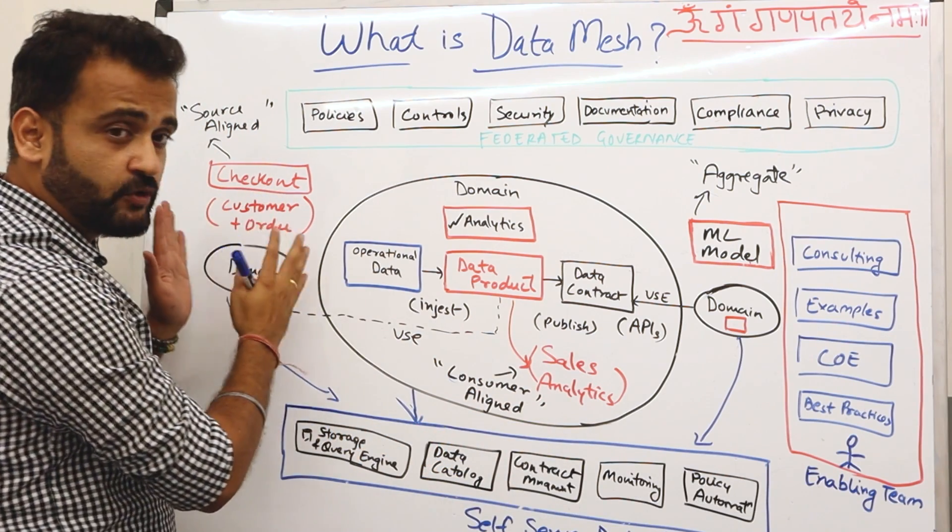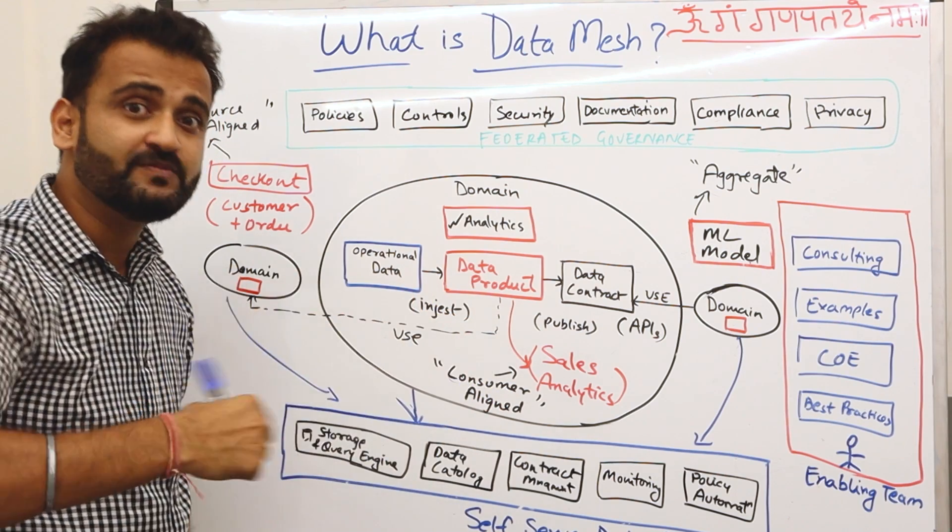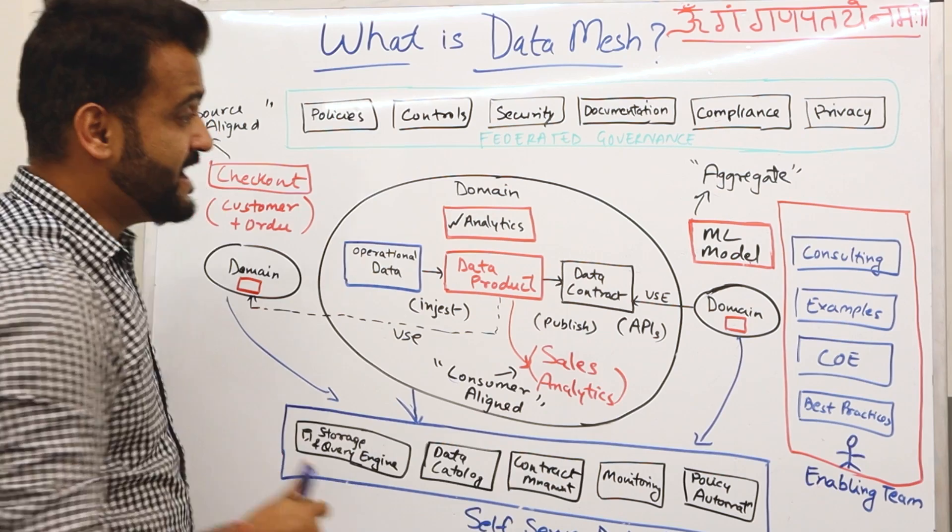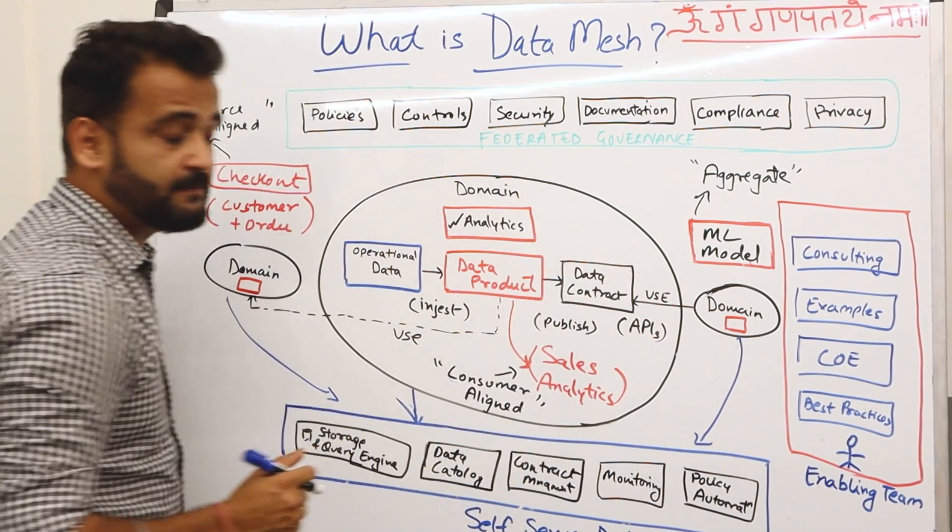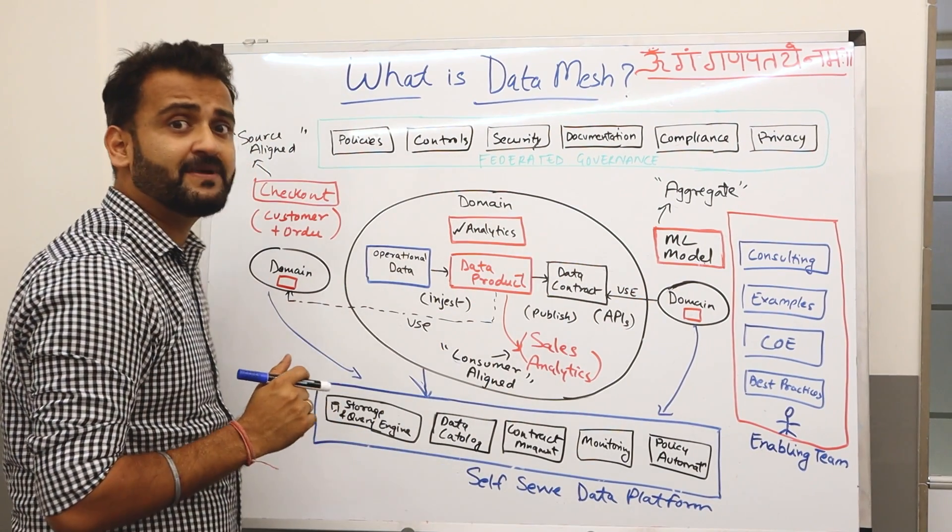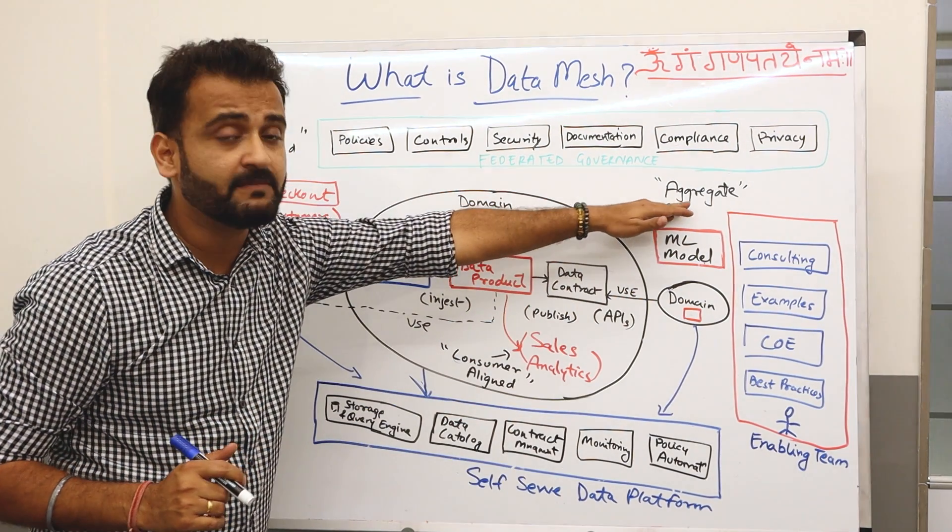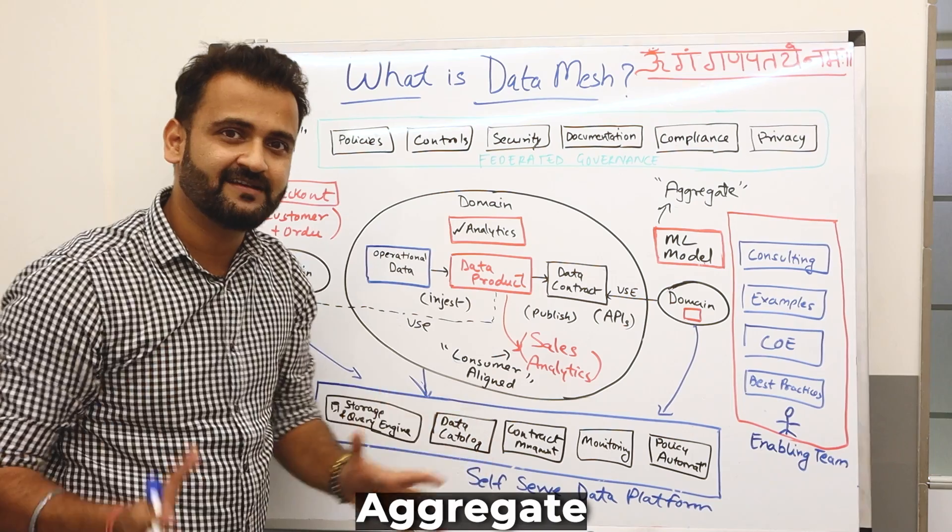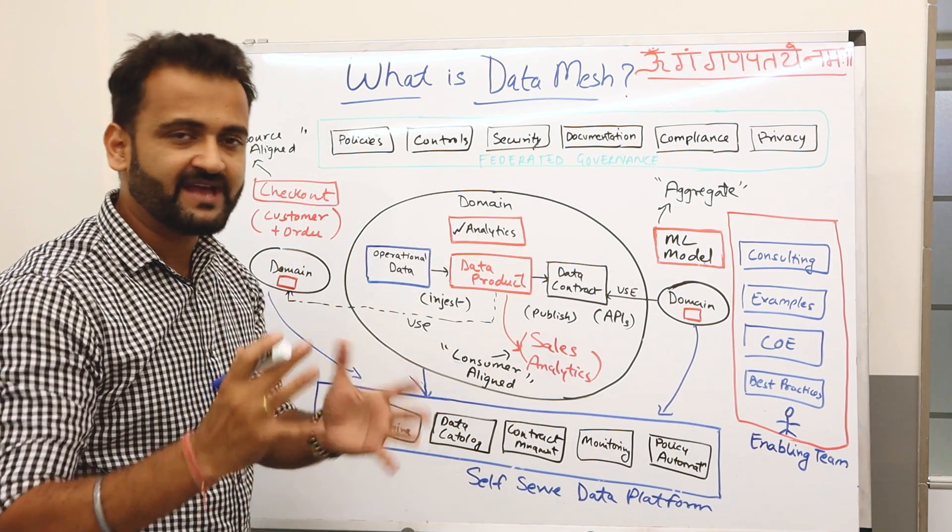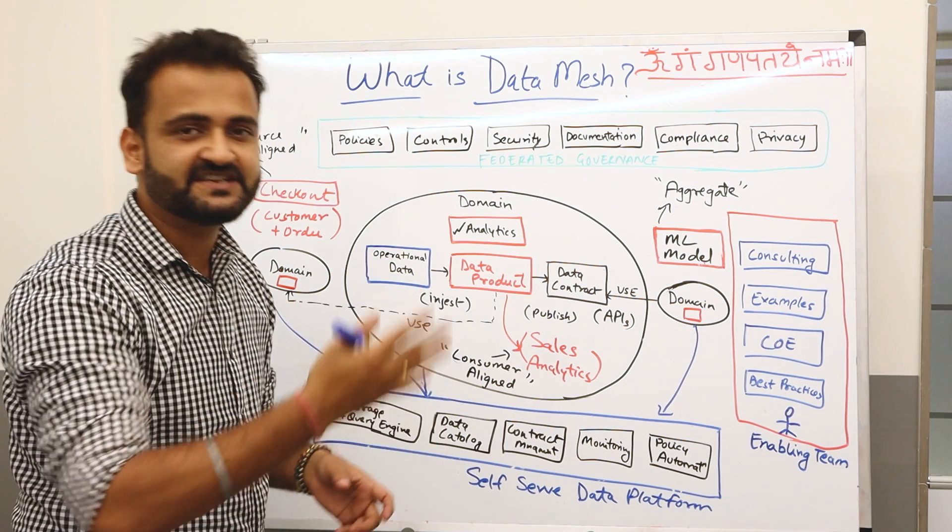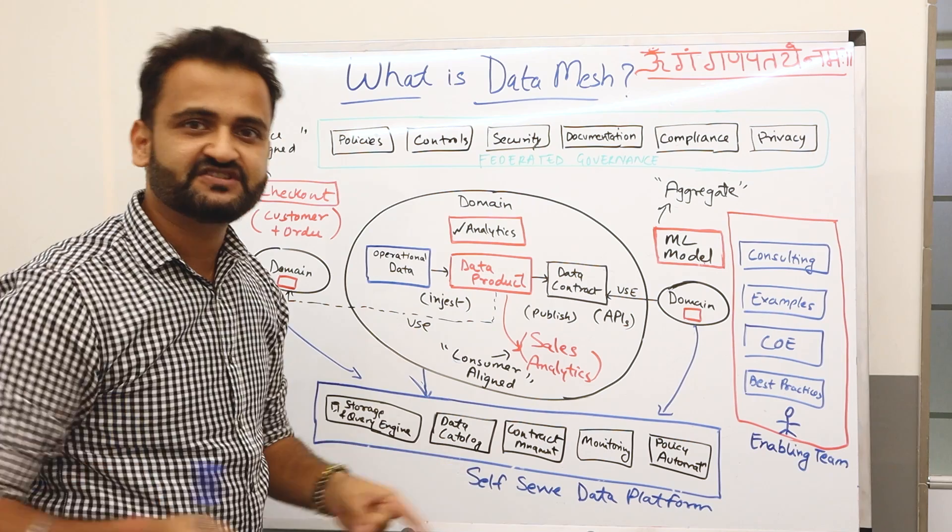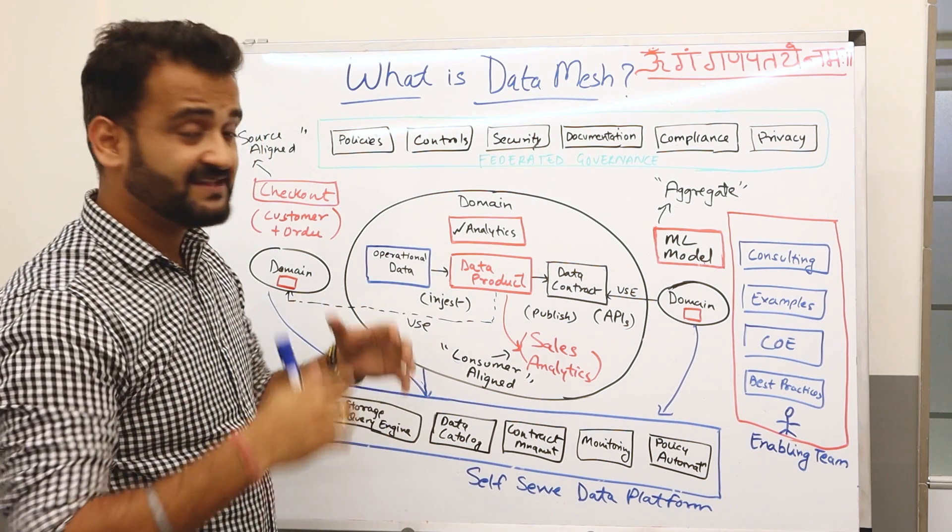Now sales analytics is more of a consumer-aligned data. This is where the producer is producing the data, but this is where the consumers are consuming it. It is more consumer aligned. We want to understand what's happening in sales. And then, for example, this particular domain needs the sales analytics data for generating a recommendation model. And this will come under the classification of aggregate. Aggregate is a complex stuff, mixing everything together and aggregating. Customer 360, for example, you want to create a CRM dashboard showing the customer journey, 360 customer journey, then that also will come under aggregate.